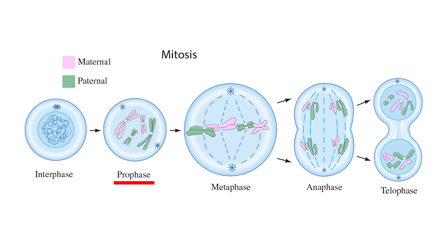Prophase: in this stage, chromosomes condense and become visible under a microscope. The nuclear membrane begins to disintegrate. Spindle fibers start to form from the centrosomes, which move to opposite poles of the cell.